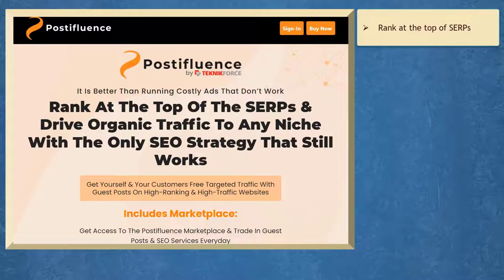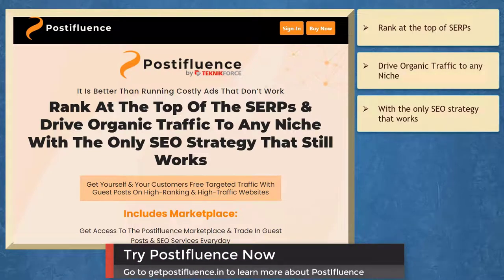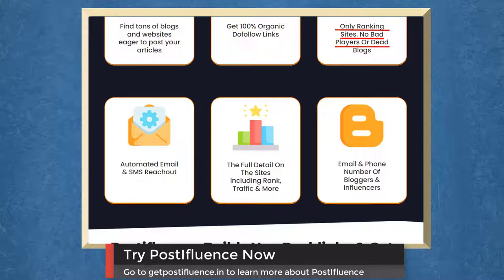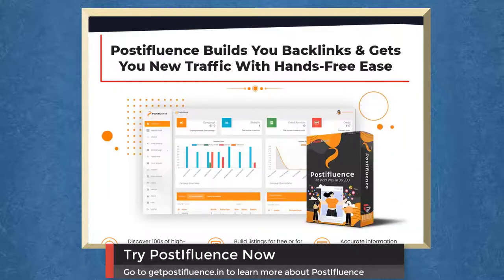If you need to rank at the top of the SERPs and drive organic traffic to any niche with the only SEO strategy that still works, we have a marketing app that can help you get leads using Post-influence. You can find tons of blogs and websites eager to post your articles. Get 100% organic do-follow links. Use ranking sites and no bad players or dead blogs. Automated email and SMS reach out. Get the full details on the sites using rank, traffic, and more. Get the email and phone number of bloggers and influencers — Post-influence gets you new traffic with hands-free ease.